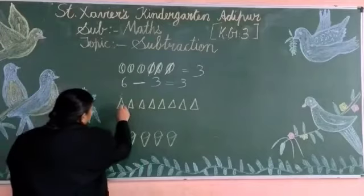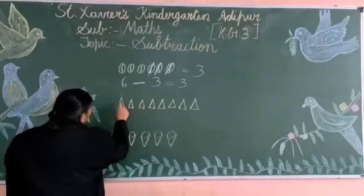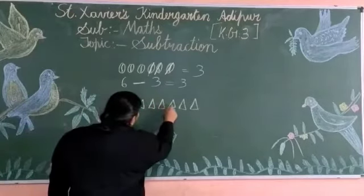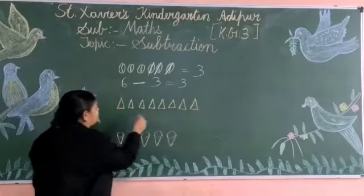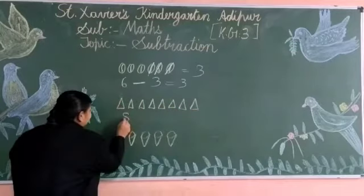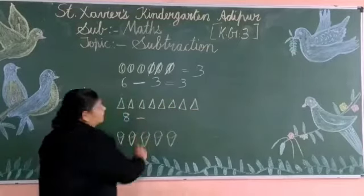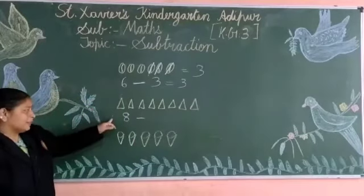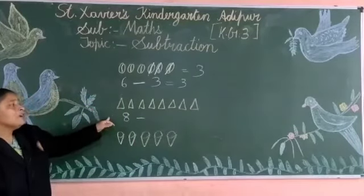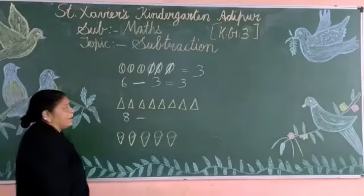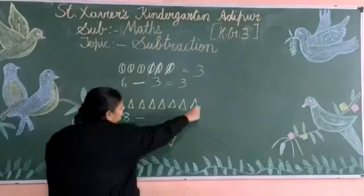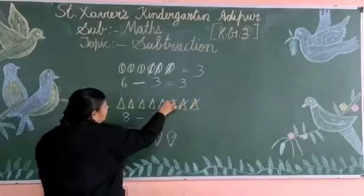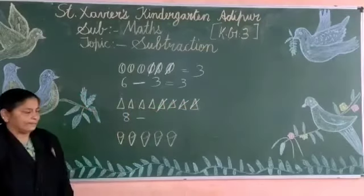Now triangles. Count the triangles. 1, 2, 3, 4, 5, 6, 7, 8 triangles. Now you have to cut 4 triangles. How many triangles? 4. So 1, 2, 3, 4 triangles.